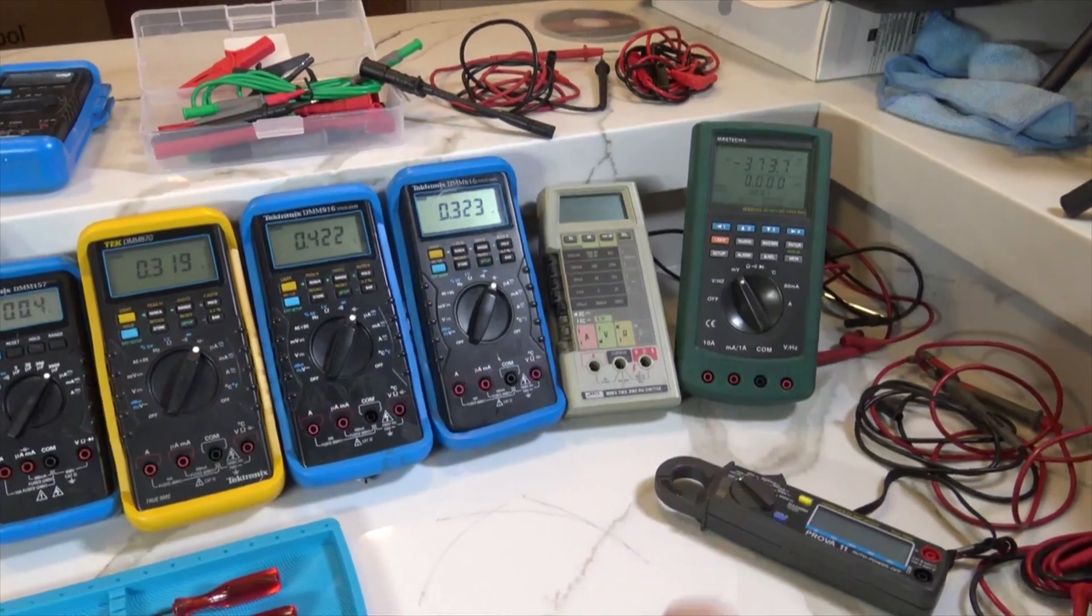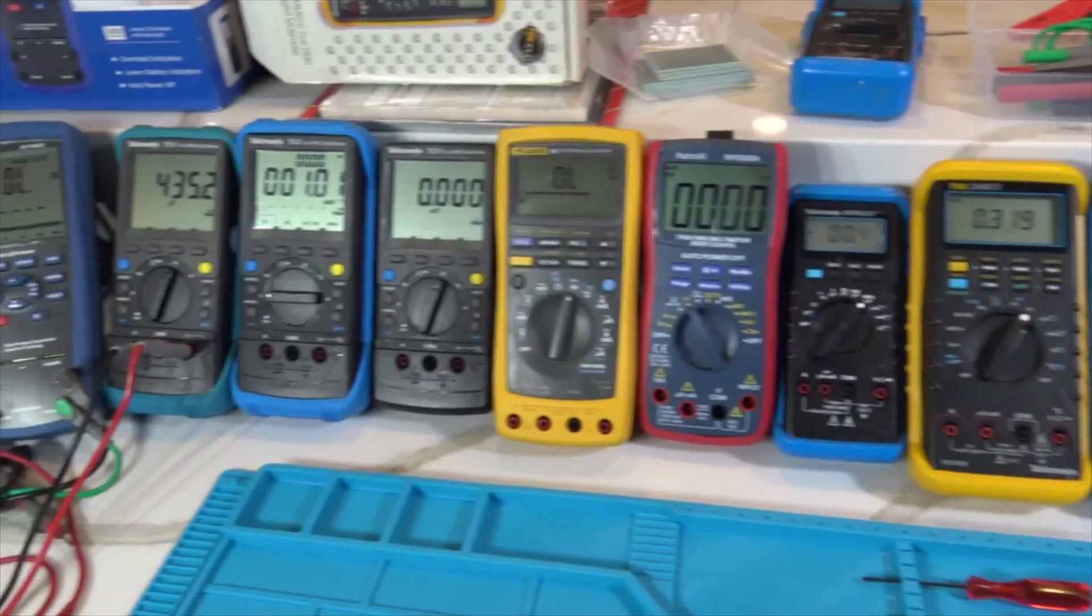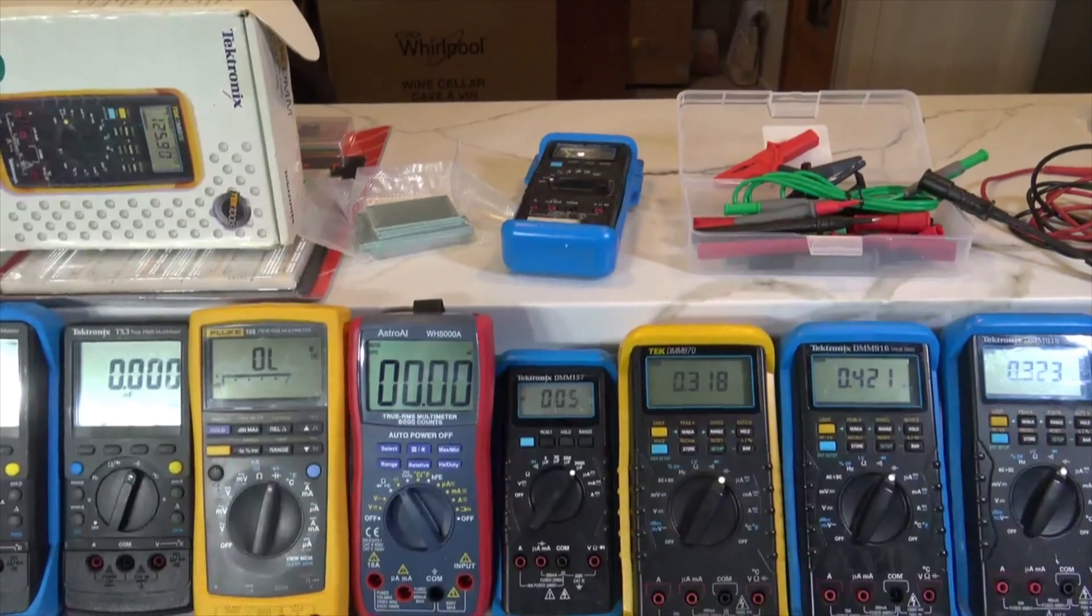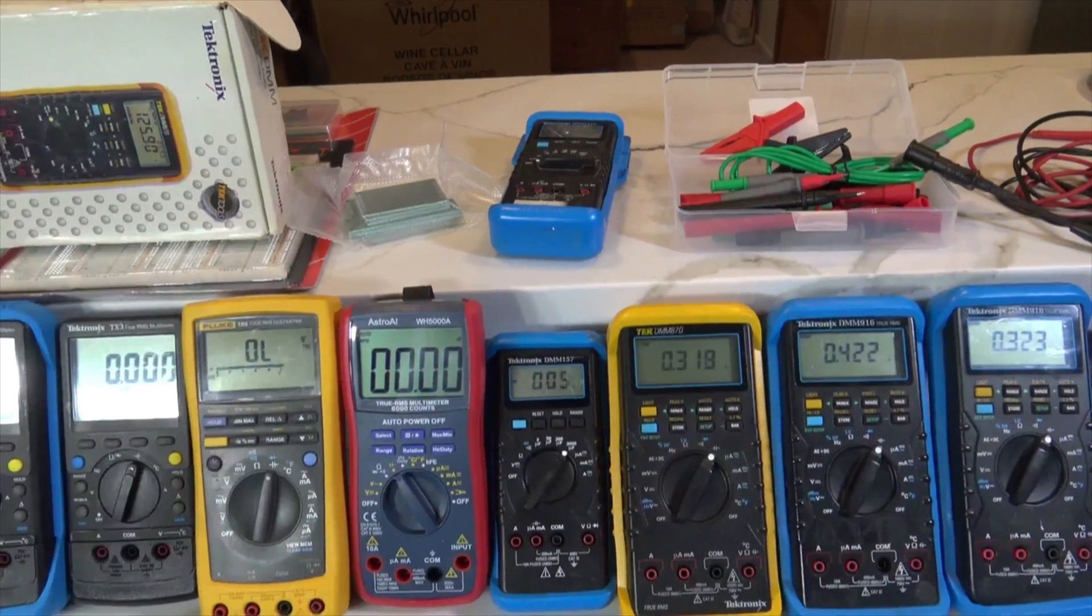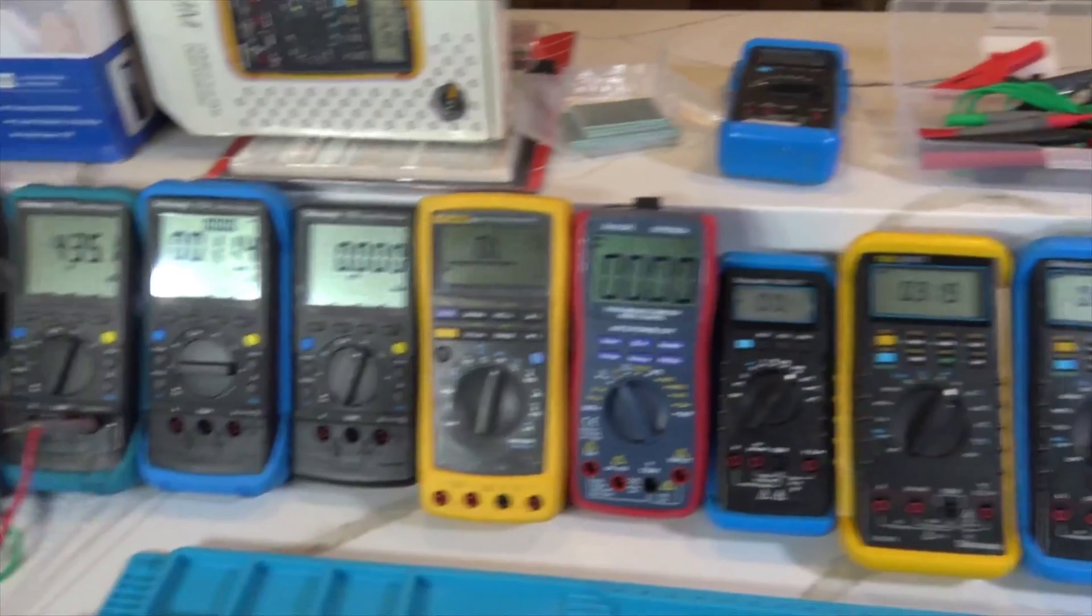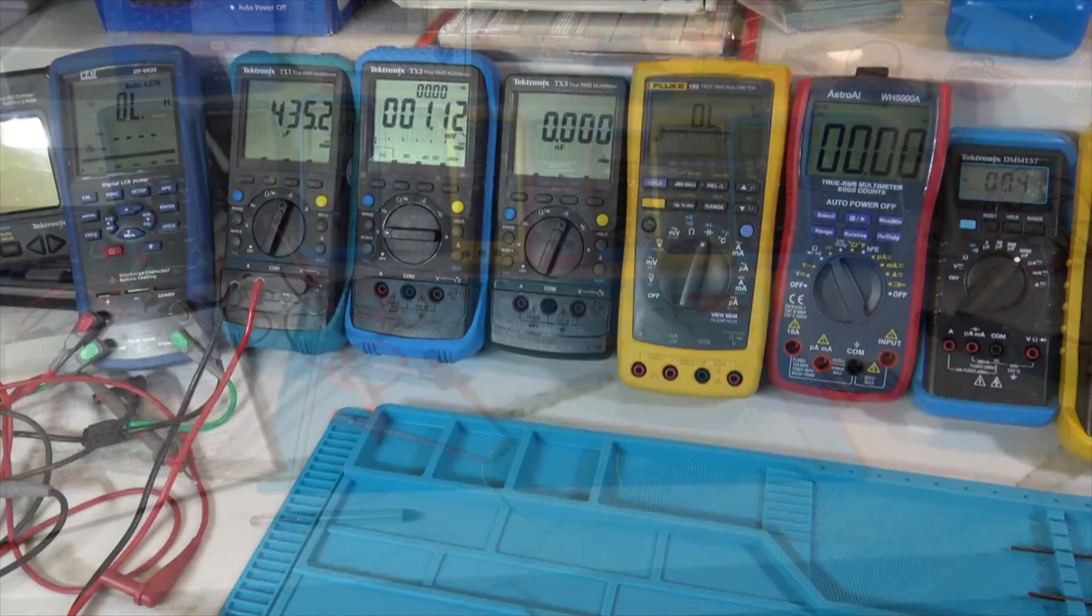And the Fluke 8060 and the Mastic are not in this test. And up there is another DMM157 that I did take readings from, but anyway, there's the meters. It's a closer look.